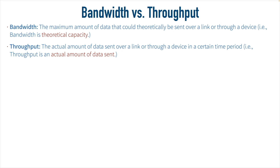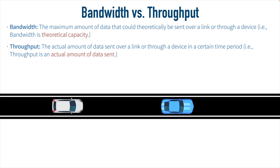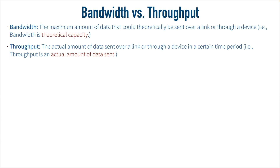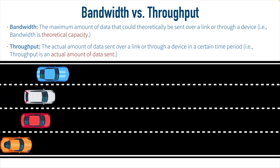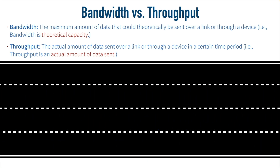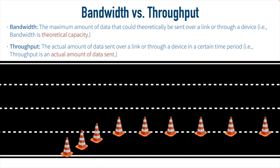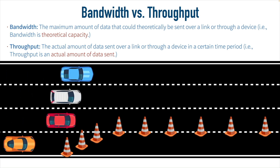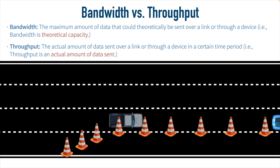To visualize bandwidth and throughput, think of driving a car down the road. If you're on a one-lane road, there's a limited amount of cars that could travel over that roadway at any one time. However, if we added additional lanes to that roadway, then we could have many more cars simultaneously going over it — that's analogous to increasing bandwidth. But throughput is the actual amount of data we're sending, because we might have some packets that get corrupted, dropped, or have to be retransmitted. In our road analogy, imagine road construction with traffic cones — one lane merges into another, slowing overall traffic flow. That's analogous to errors on a network reducing the throughput of a link.